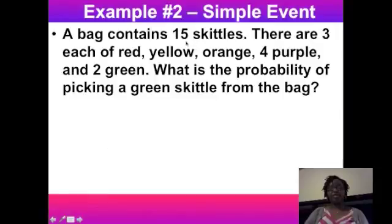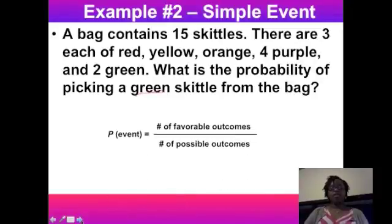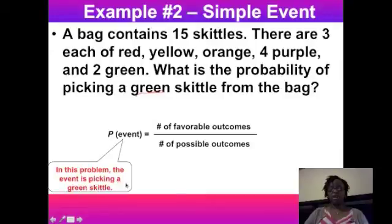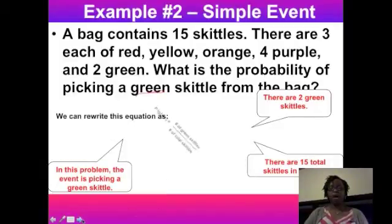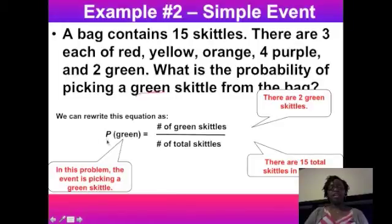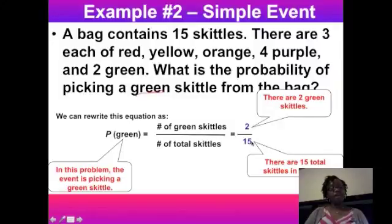For example two, we have that same bag of 15 Skittles and this time we want the probability of picking a green Skittle. Using favorable over possible, there are two green Skittles out of 15 total, so the probability of green is 2/15. That can't be simplified, so if we drew from the bag 15 times we could expect a green one two times.